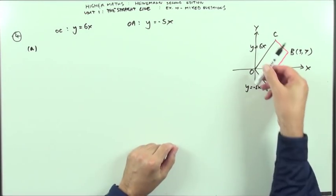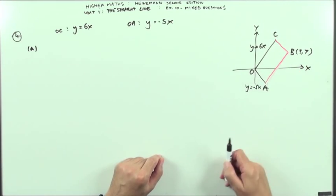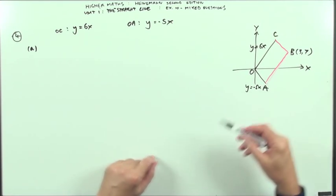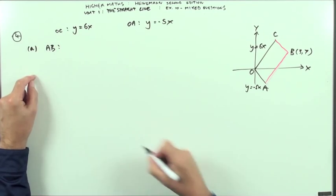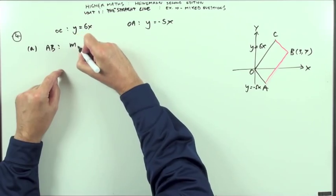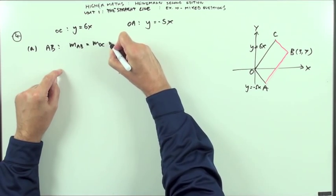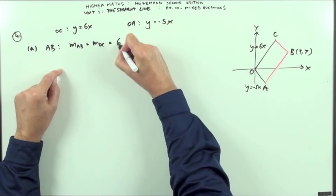Since it's a parallelogram, opposite sides are parallel, and if opposite sides are parallel, they've got the same gradient which means I know the gradient of AB. The gradient of AB is equal to the gradient of OC, which I know to be 6.